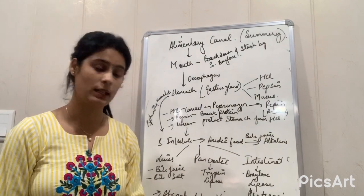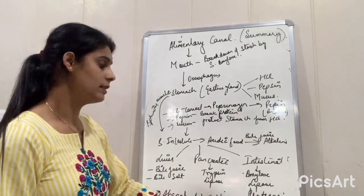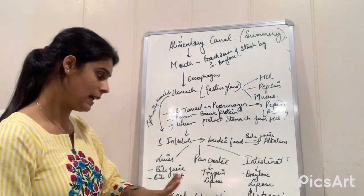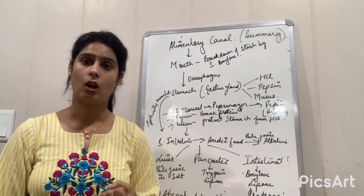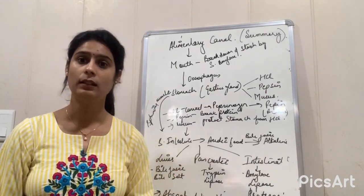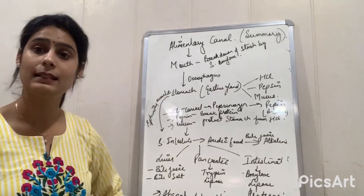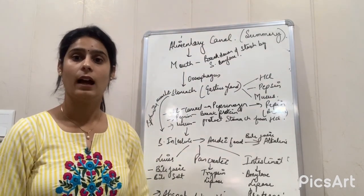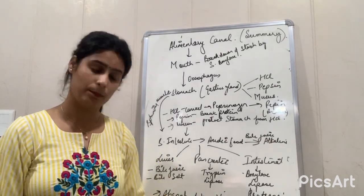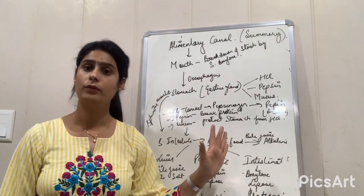Once the food is completely digested in the small intestine, it is absorbed by the body through villi, which are finger-like projections in the walls of the small intestine. The undigested food then goes to the large intestine, where water is removed and the food becomes solid and hard. This solid undigested food is removed from the body through the anus by the anal sphincter. This process is called egestion. That is all for this topic.